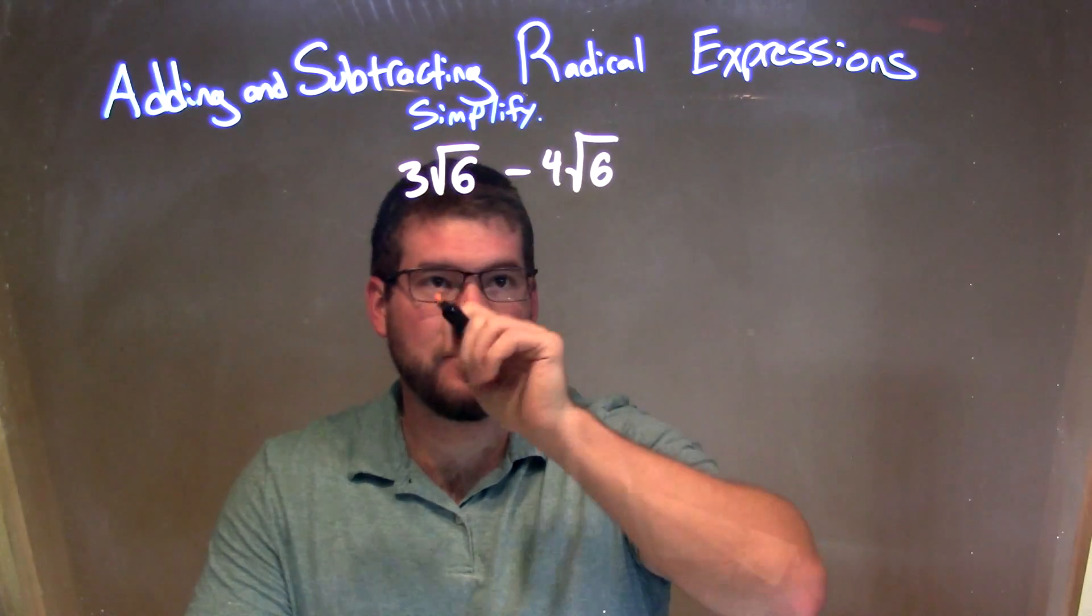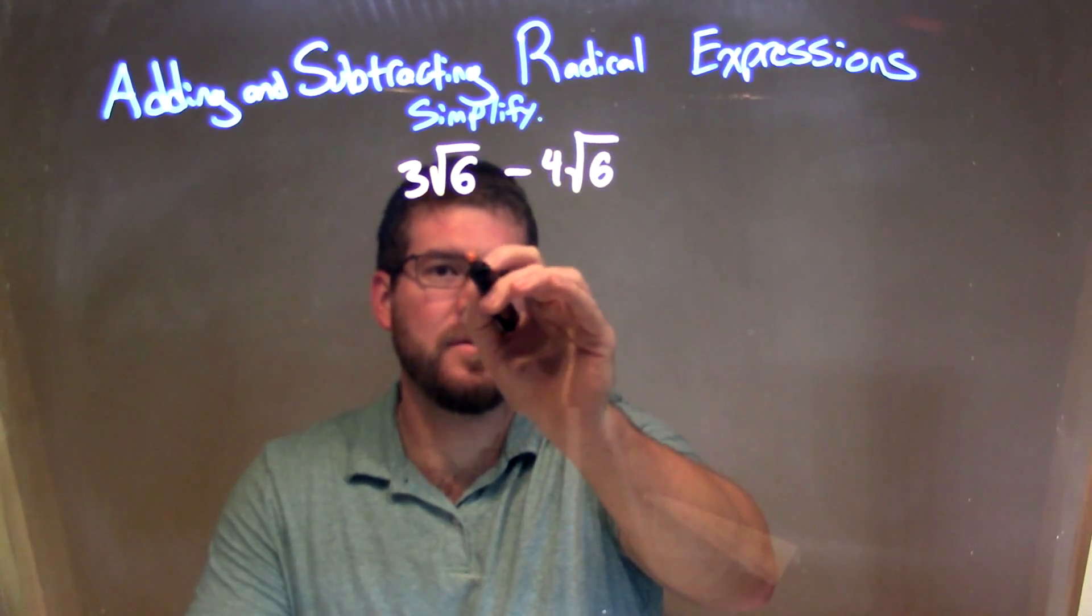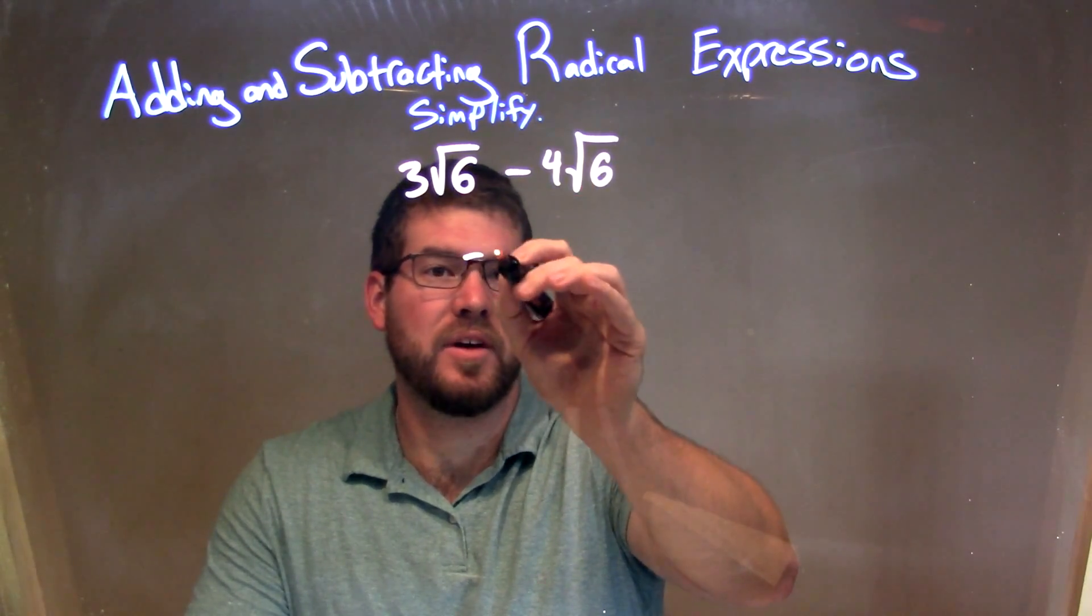we can just subtract and keep the square root of 6 there. So 3 minus 4 is negative 1, so we have a negative, right, and then square root of 6.